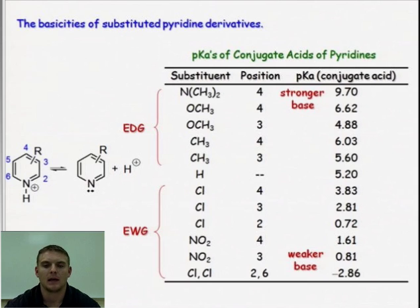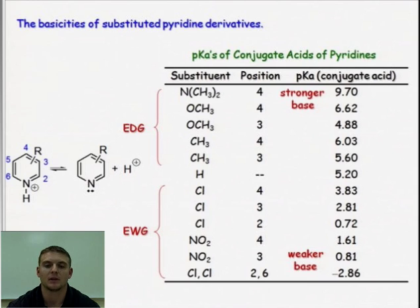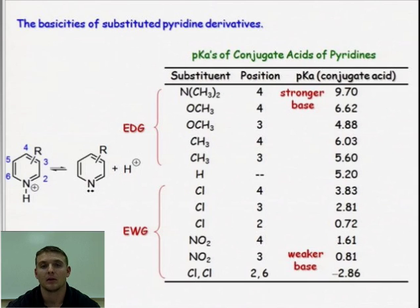If we think of adding electron-donating groups onto this ring, either through inductive or resonance effects, we can increase the electron density or increase the reactivity of this lone pair. The table shows that different electron-donating groups do, in fact, make the nitrogen lone pair a stronger base. Analogously, if we think about attaching electron-withdrawing groups to the pyridine, electron-withdrawing groups inductively pull electron density all the way through the ring away from the nitrogen, making the lone pair less reactive as a base. And in fact, the table shows that also.